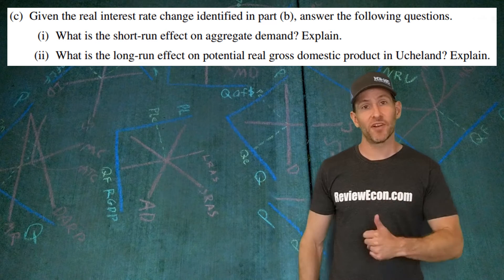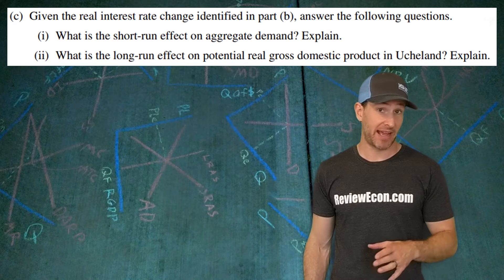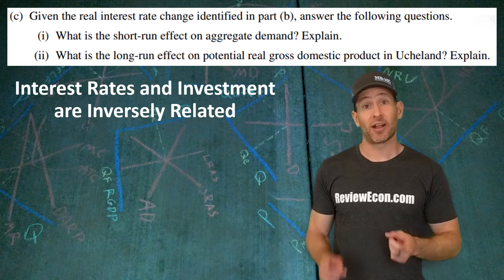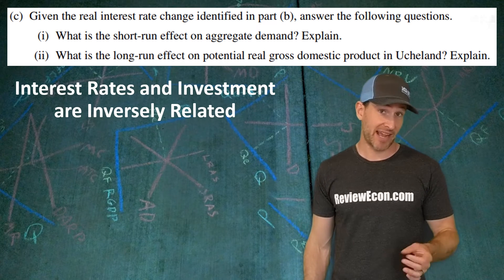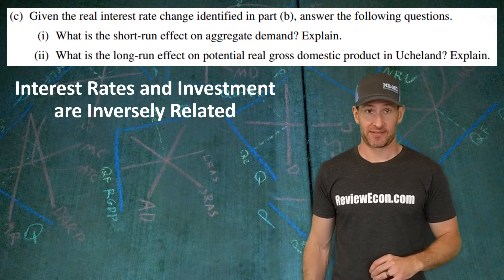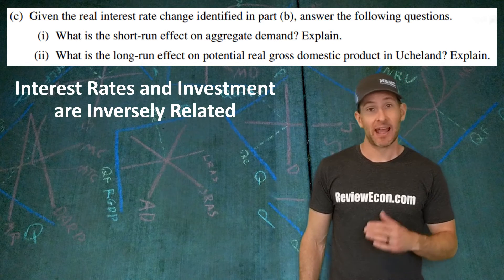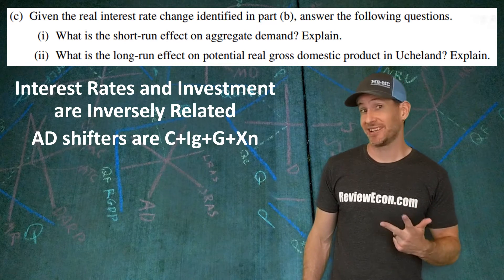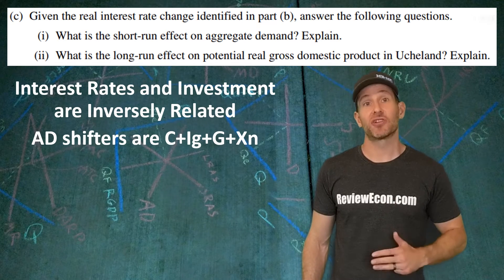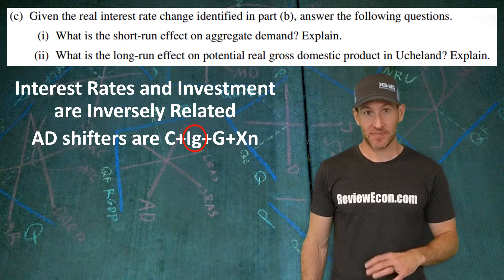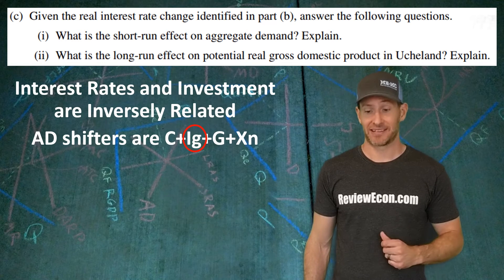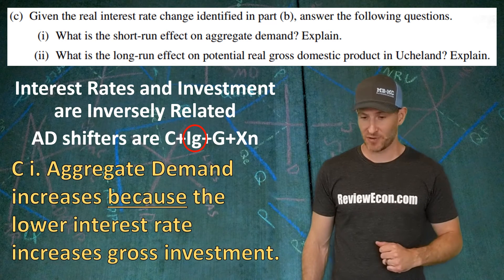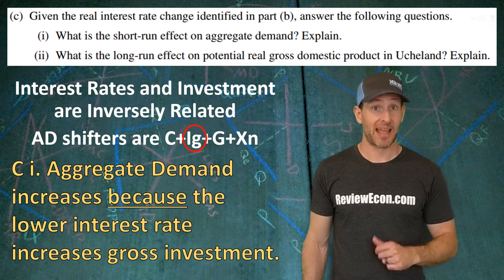Part C has two components. The first asks us to identify what will happen to aggregate demand as a result of the decrease in the interest rate we just identified. Interest rates and investment are inversely related, so investment is going to increase. Investment is one of the components of aggregate demand — consumption, gross investment, government purchases, and net exports. Since investment is increasing, aggregate demand shifts to the right. You need to say that aggregate demand increases because lower interest rates will increase gross investment.